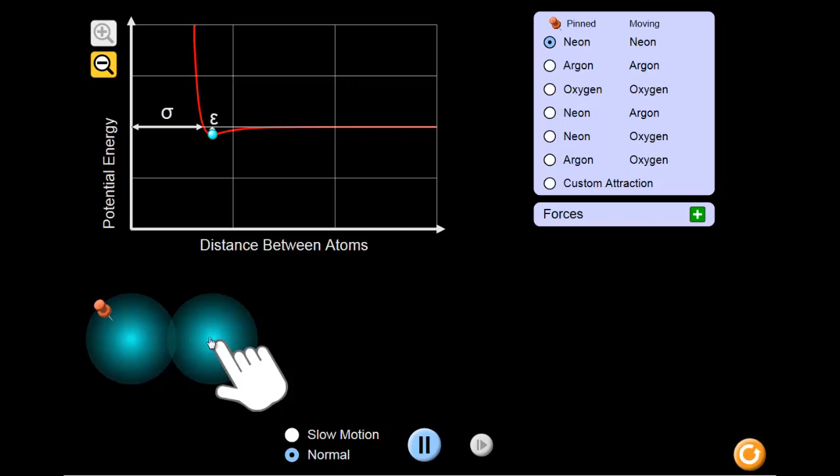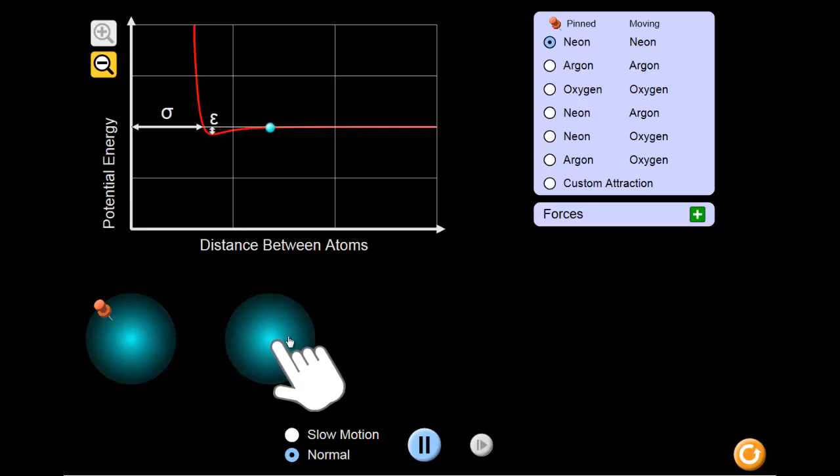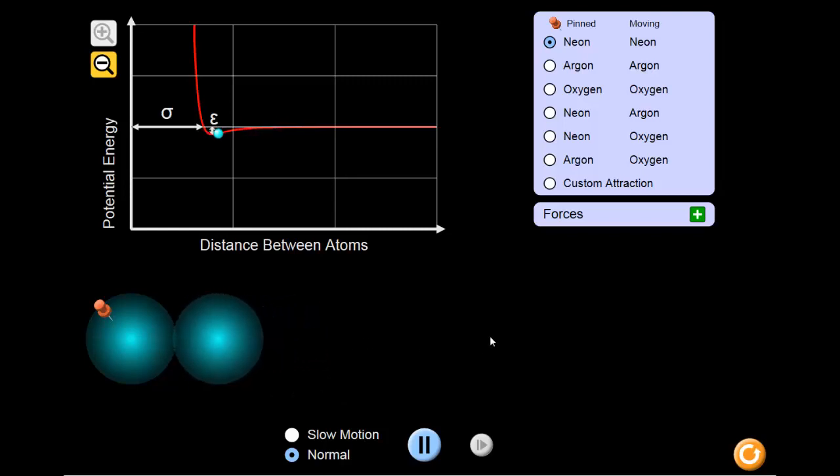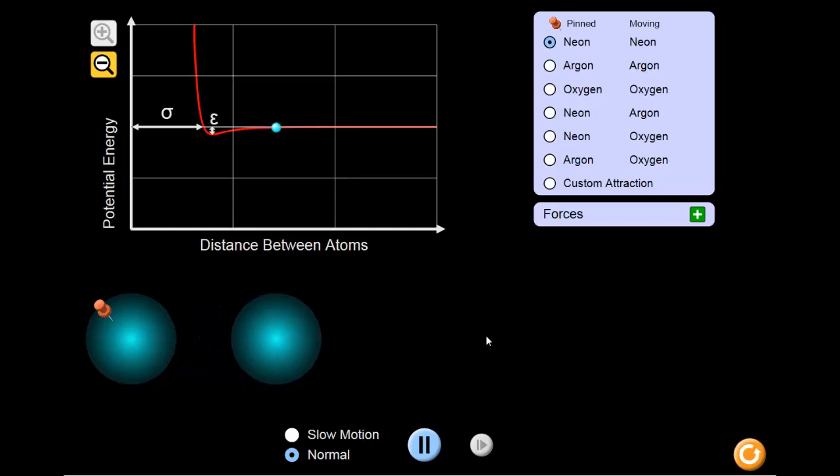Let's see what happens when we move the atoms apart and then allow them to move freely. As you can see, the atoms will move toward each other slowly, speed up, and then seem to bounce off each other.